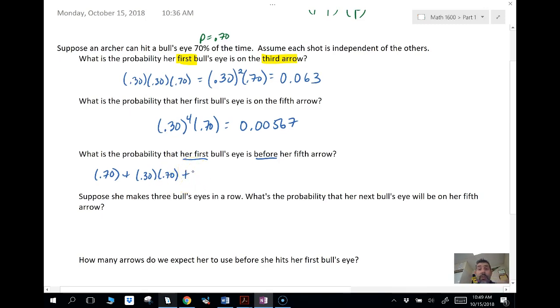Or she can hit it on the third arrow, so that means she's going to miss two and then make one. Or she can hit it on the fourth arrow, and that would still be before her fifth arrow. And then we would add those all together and we're going to get 0.9919.